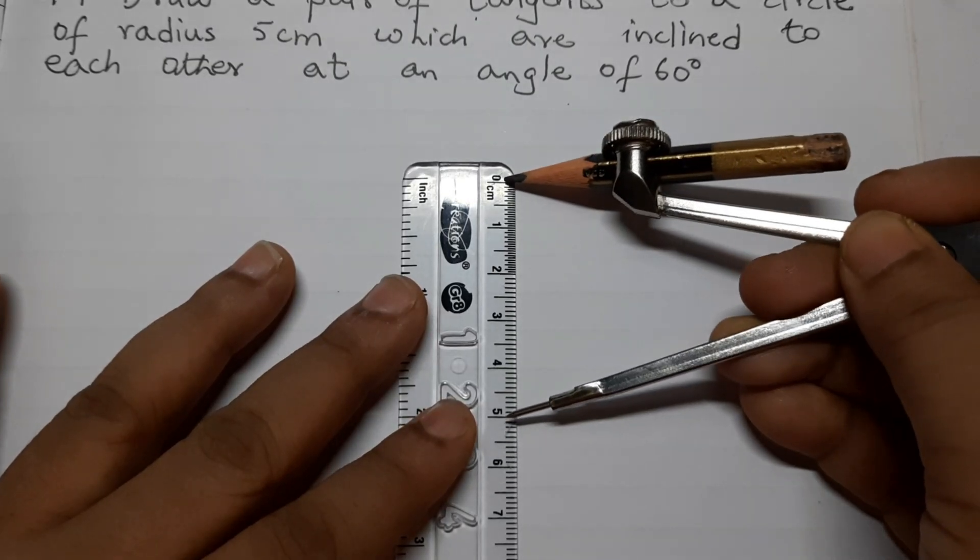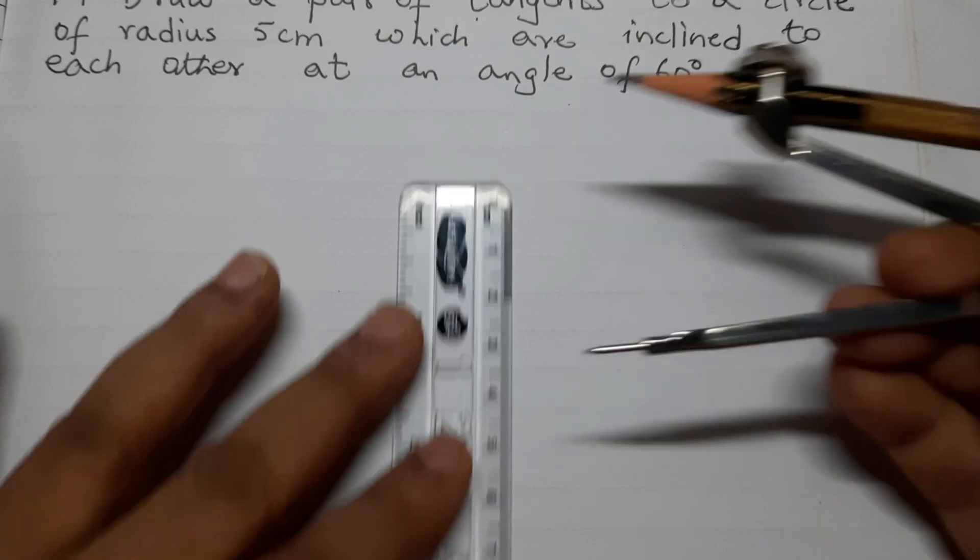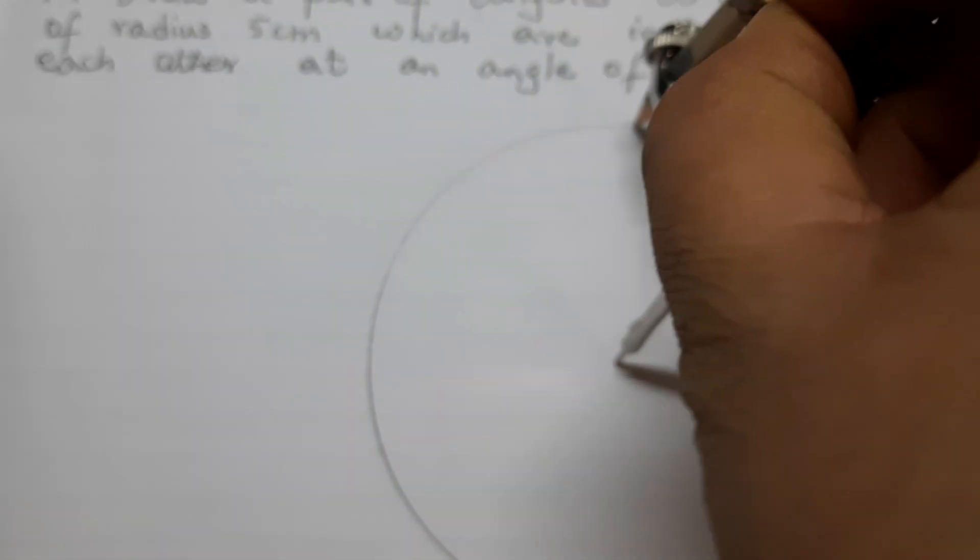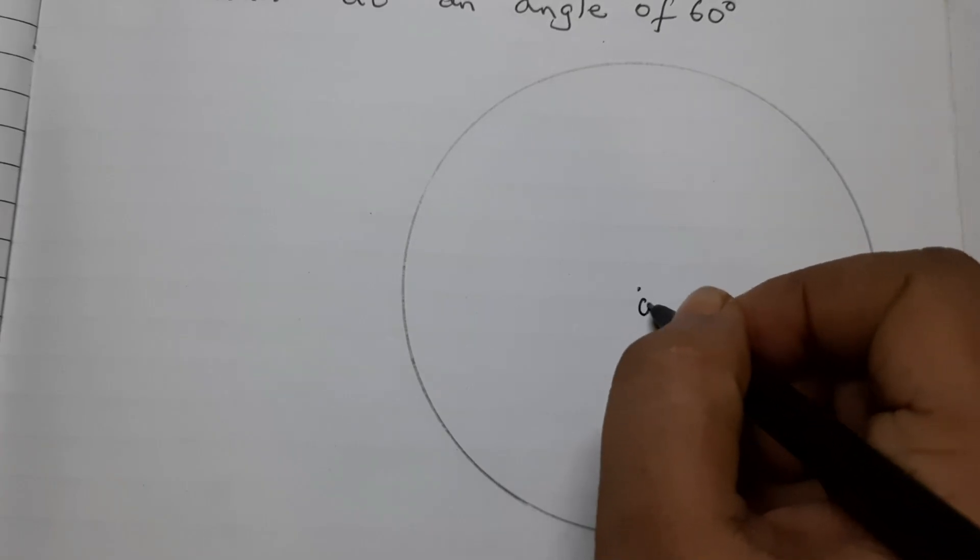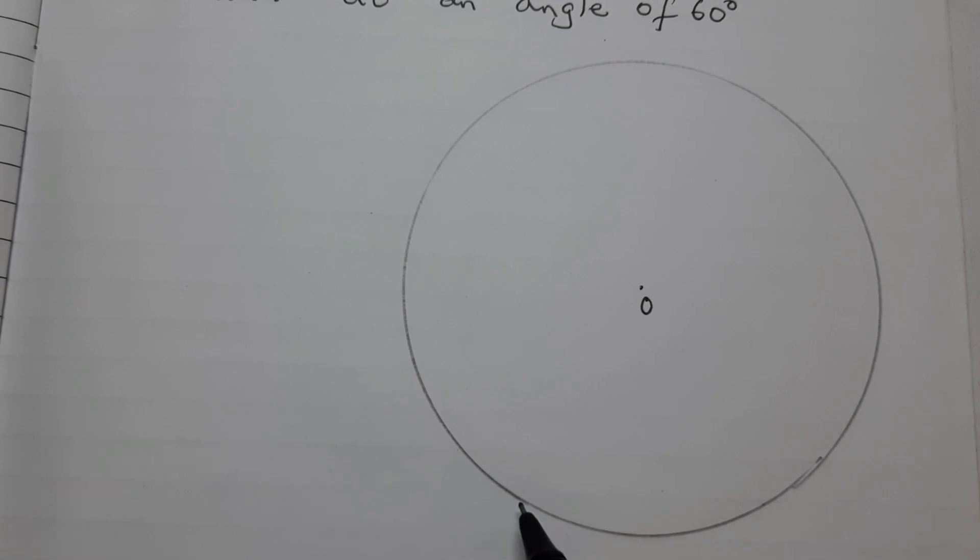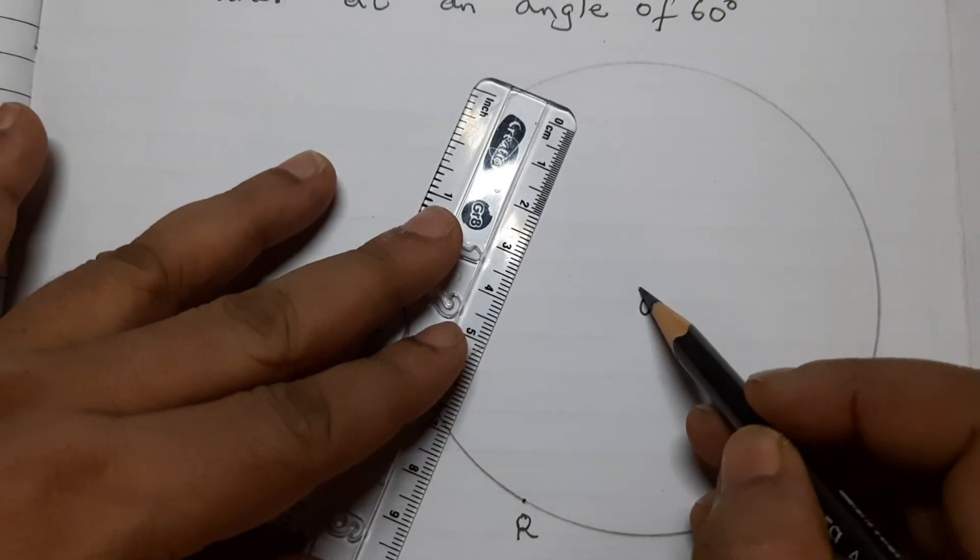The first step is to draw a circle of radius 5 cm with center as O. Now take any point on the circumference of the circle and mark a point R. Join O, R.